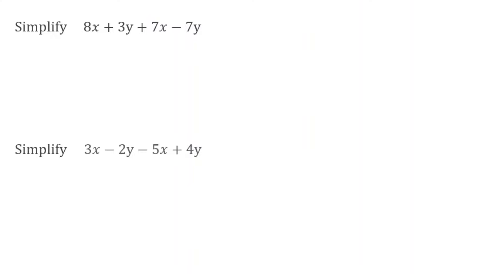Looking at this next question, we have simplify 8x plus 3y plus 7x subtract 7y. Let's identify the terms of x. We have 8x plus 7x. If I do 8x and I add another 7x, that should give me 15 lots of x, so 15x.